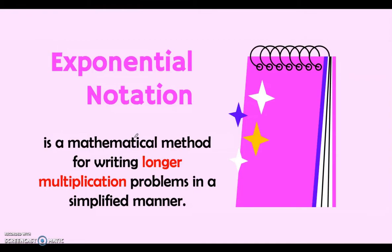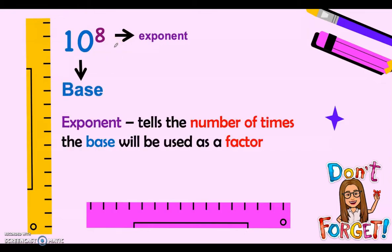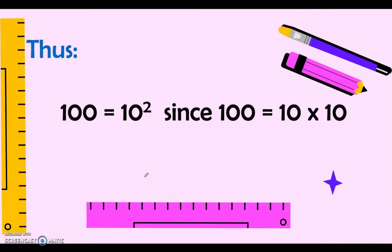Let us observe further the meaning of the small number written on the upper right of 10. The small number 8 is called the exponent, and 10 is called the base. The exponent tells the number of times the base will be used as a factor. The base is the number being multiplied by itself repeatedly.